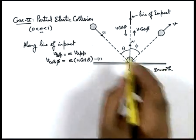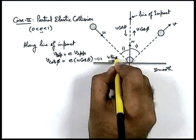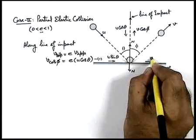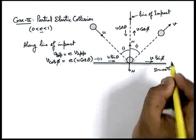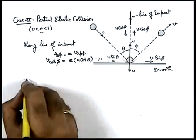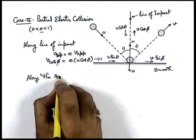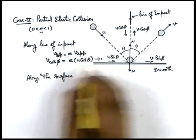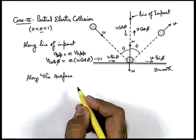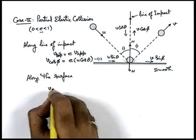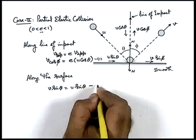Along the surface, the initial velocity component was u sin theta and after collision it is v sin phi. Since the surface is smooth and no external force is present, momentum along the surface remains the same. For a single ball, mass cancels out, so we write: v sin phi equals u sin theta. That is our equation two.